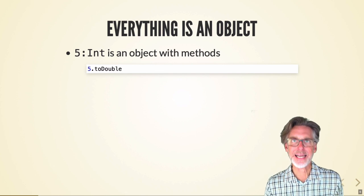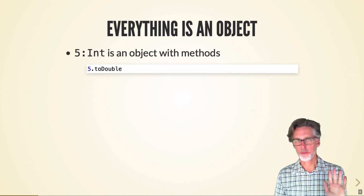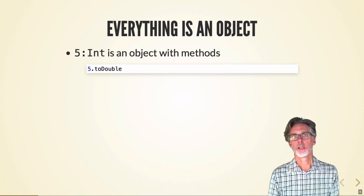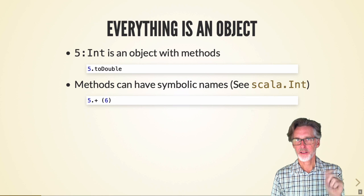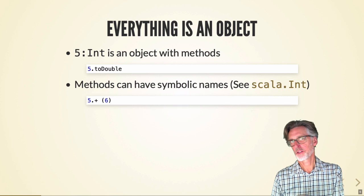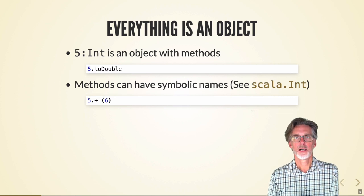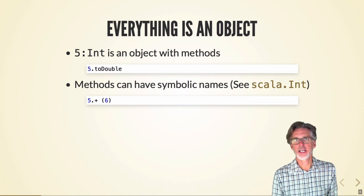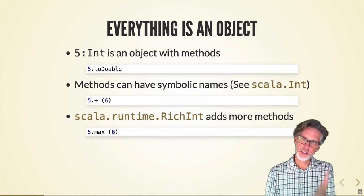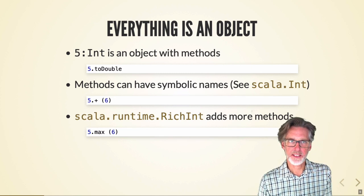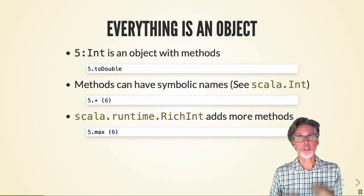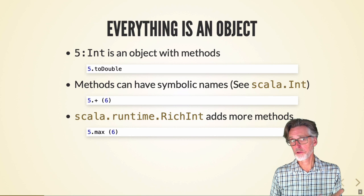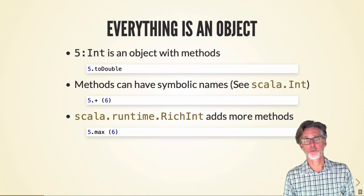In Scala everything is an object, so the number five is just an object. You can invoke methods on these, and the interesting thing is that there's not really a distinction between operators and methods or functions in Scala. Operators are just treated like any other method. In addition to the things you'd expect on integers in Java, Scala gives you some additional methods such as max and so on.